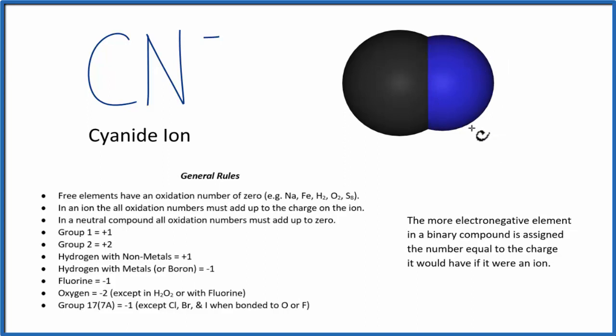So nitrogen is more electronegative, and if we look at the periodic table, it's in group 15, sometimes called 5A, nitrogen has a charge of 3-. So let's write that here for the nitrogen. We know that this is 3-.